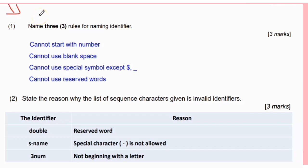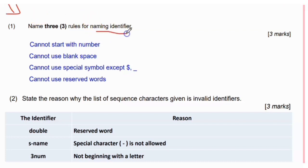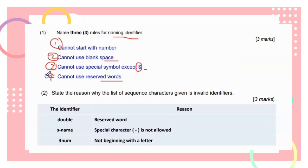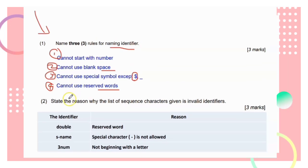So to summarize the rules for naming identifiers: first, cannot start with a number — but can start with a character, underscore, or dollar sign. Second, cannot use blank spaces — that's why we use underscores. Third, cannot use special symbols except the dollar sign. Fourth, cannot use reserved words, for example 'double' or 'char'.